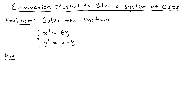You cannot solve one equation separately because there are two dependent variables, x and y. The y depends on the second equation and x depends on the first, so they are coupled. When you have a coupled system, what we normally do is remove one variable — that's the goal of elimination — and try to write the equation using only one variable.